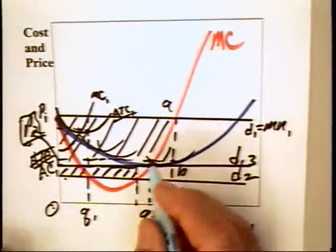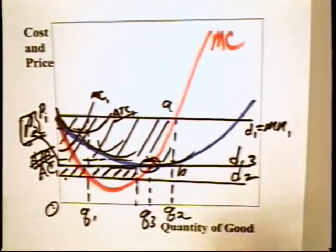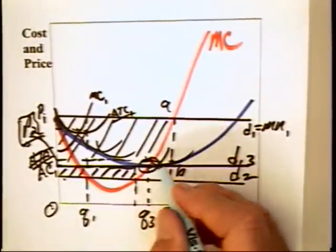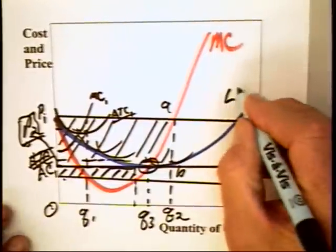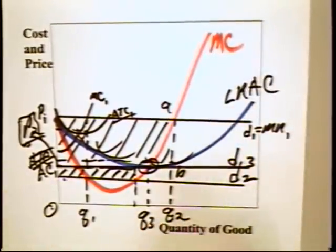Well, the moral of the story is that the price should adjust to where in the long run it settles at the minimum of the long run average cost curve. In that sense, the firm is efficient.